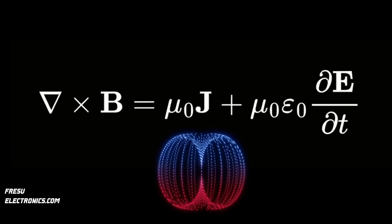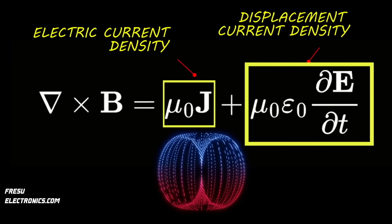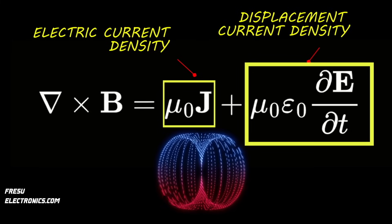These phenomena are represented by two terms, the electric current density J and the displacement current density, the latter being on the right side of the equation. The first term, the electric current density, is often described as water flowing through pipes. The second term, the displacement current density, might be more familiar to you when thinking about the current in a capacitor.